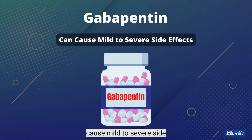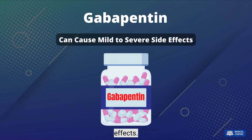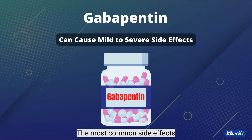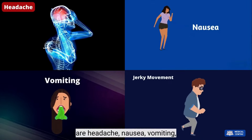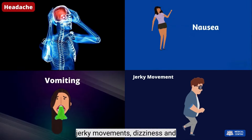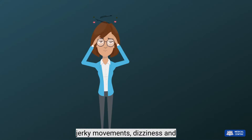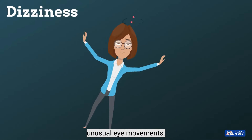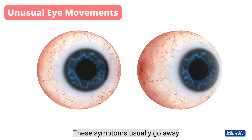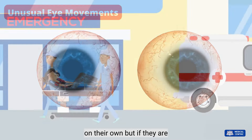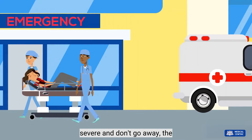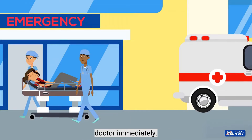Gabapentin can cause mild to severe side effects. The most common side effects are headache, nausea, vomiting, jerky movements, dizziness, and unusual eye movements. These symptoms usually go away on their own, but if they are severe and don't go away, the patient should contact the doctor immediately.